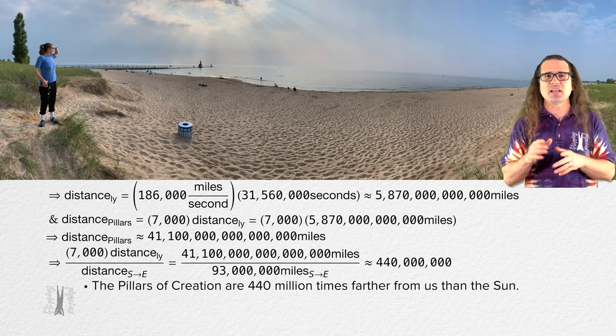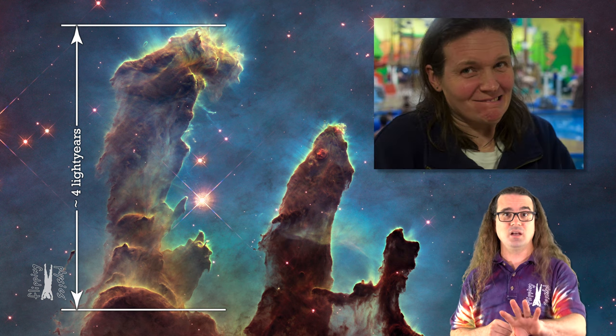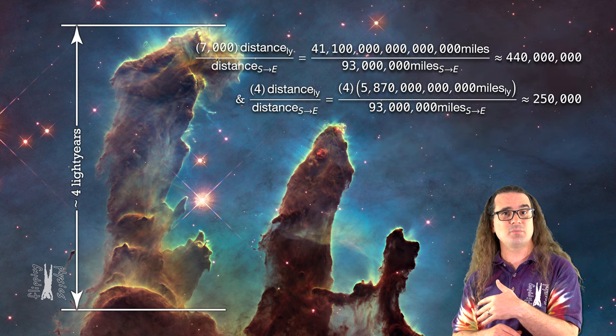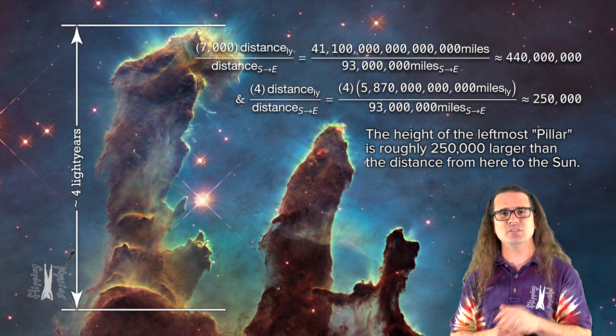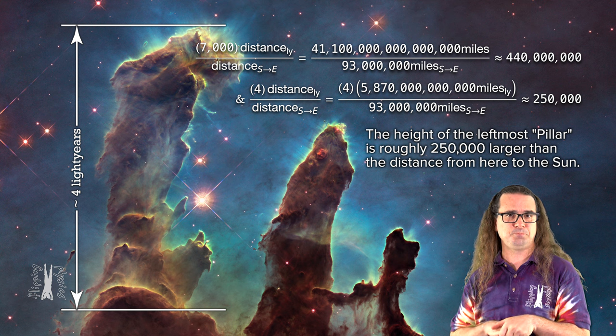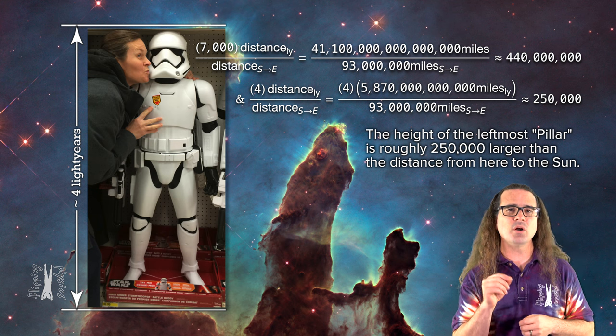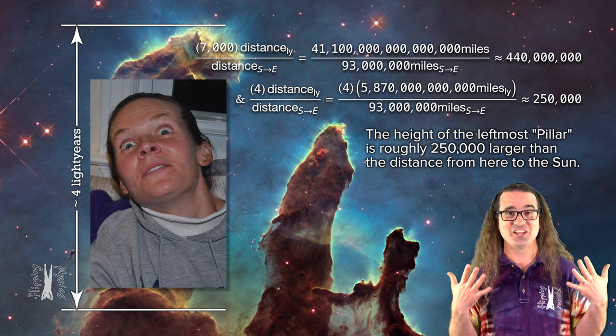The next question I want to answer is how big are they? So looking at the pillars of creation and zooming in on the left pillar, the distance from the base of the left pillar to the top is roughly 4 light years. Again Kate, I know this distance doesn't mean a whole lot to you. So we can calculate, just like we did before, that the distance from the base to the top of the left pillar is roughly 250,000 times farther than the distance from here to the sun. Take a moment to appreciate that. The vertical distance in this photo is one quarter of a million times larger than the distance between the earth and the sun. Agreed.